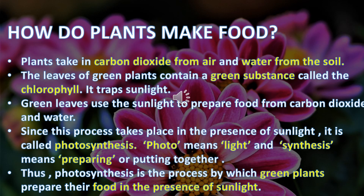How do plants make food? Plants take in carbon dioxide from air and water from the soil. The leaves of green plants contain a green substance called chlorophyll. The green substance chlorophyll traps sunlight from the sun. Green leaves use the sunlight to prepare food from carbon dioxide and water.